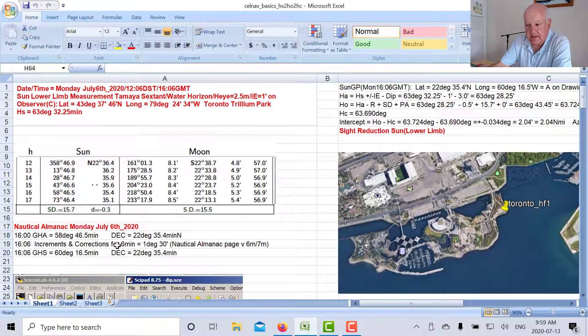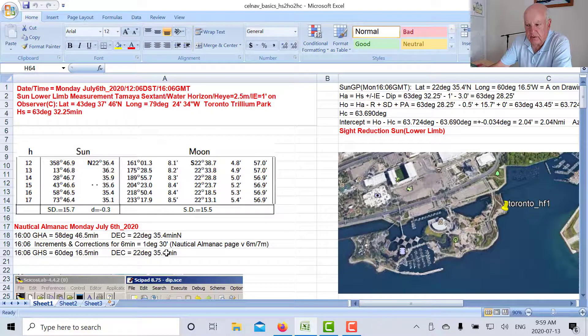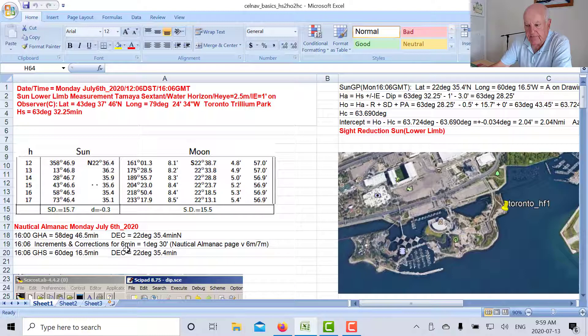We've got an extra six minutes to add on here. So if you look up in the back of the almanac for six minutes you'll get one degree 30 minutes to add on to this 58 degrees 46.5 minutes. So that turns out to be 60 degrees 16.5 minutes.